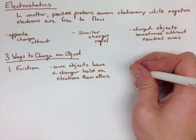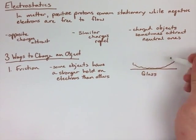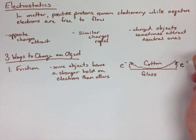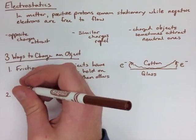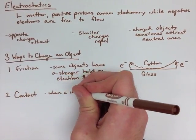if we were to rub cotton and glass together, the electrons would leave the glass and move into that cotton, because cotton has a stronger hold on its electrons. The chart in the center of the sheet shows some common things that we deal with, and their ability to hold on to their electrons.